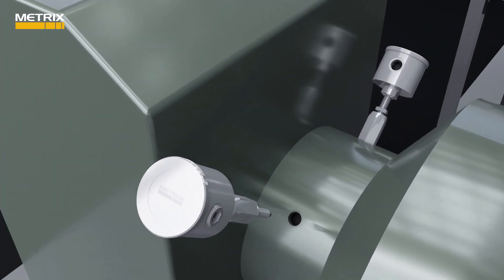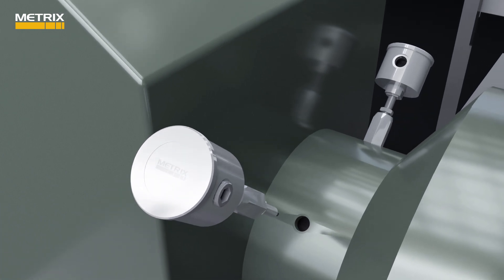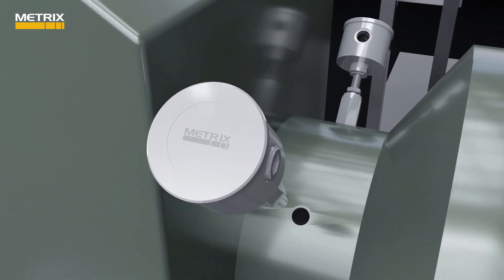The Metrix MX8030 reverse mount probe is screwed into the probe end of the 5497PM probe mounting system. The probe cable is then routed through the 5497PM into the connection head.